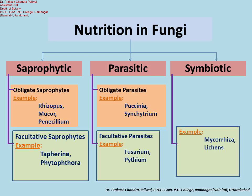Examples of facultative saprophytes include Taphrina and Phytophthora. Taphrina causes tar spot disease in maple, while Phytophthora causes late blight disease of potato. The other category is the parasitic mode of nutrition in fungi. As discussed earlier, parasites require living hosts for their survival, and parasites are of two types.